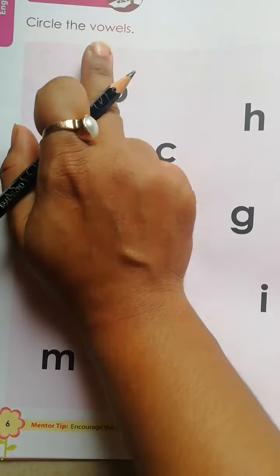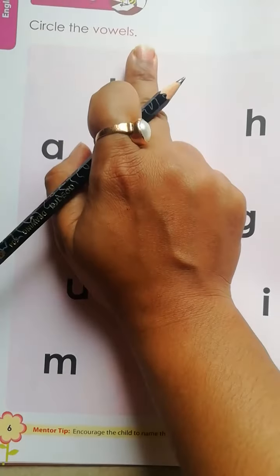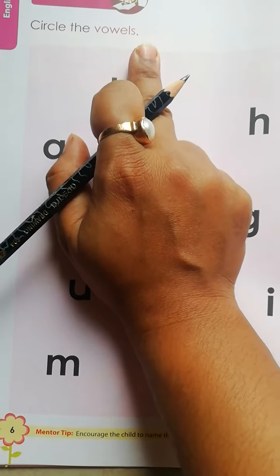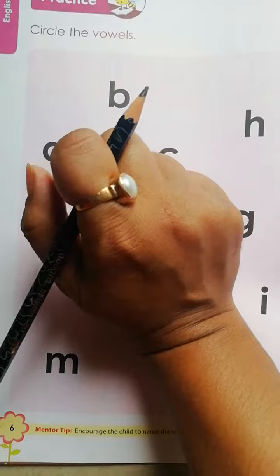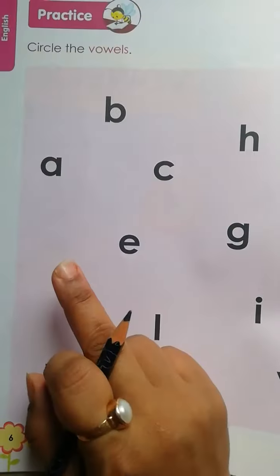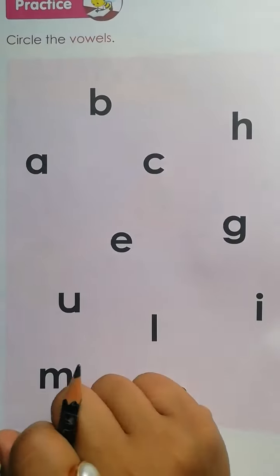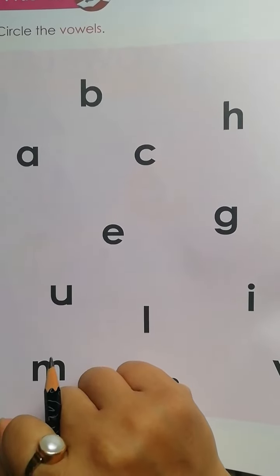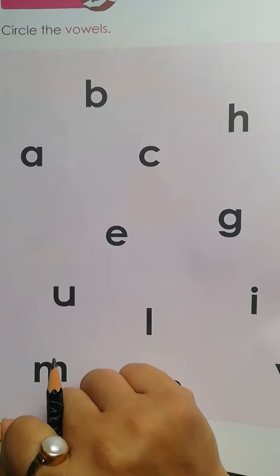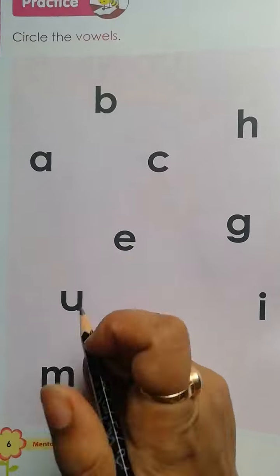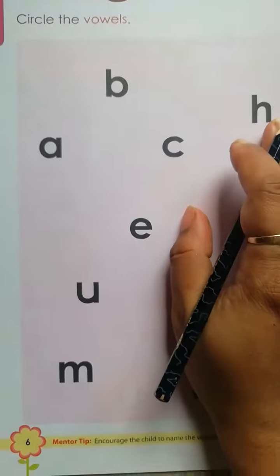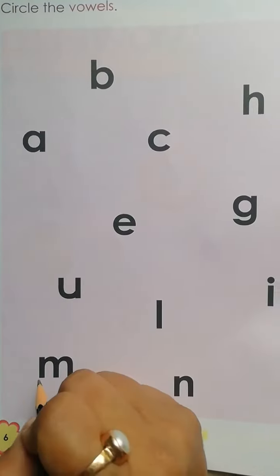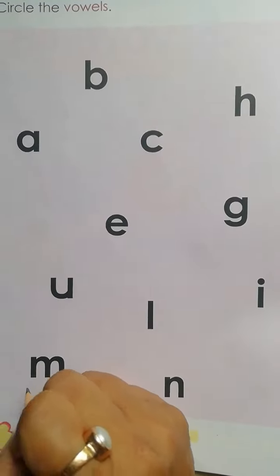Circle the vowels. We know the vowels are A, E, I, O, U. Vowels are A, E, I, O, U.